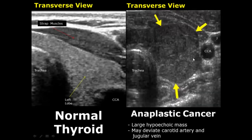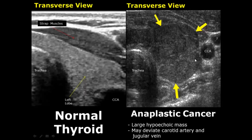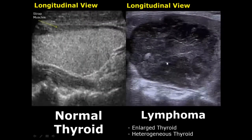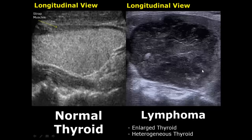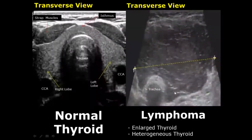Anaplastic cancers are larger in size, which differentiates them from other cancers. They appear hypoechoic and can also deviate the common carotid artery and the internal jugular vein. A lymphoma can involve the entire thyroid gland, leading to enlargement and a heterogeneous appearance. In this case you can see an enlarged thyroid gland with heterogeneous echo texture, suggestive of a lymphoma.